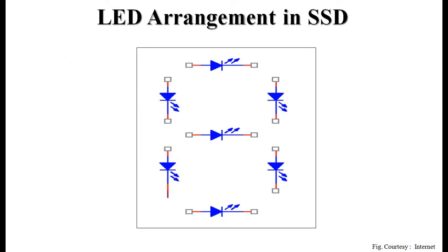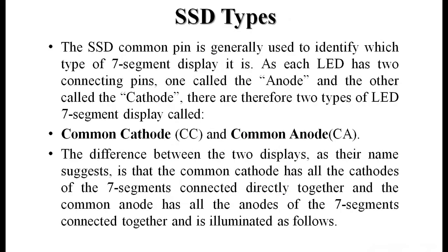The arrangement of LEDs in a seven segment display can be seen here — segments a, b, c, d, e, f, and g are shown, with LEDs connected in different configurations within the SSD. The decimal point is not shown in this view, but it also has a separate LED for representation.